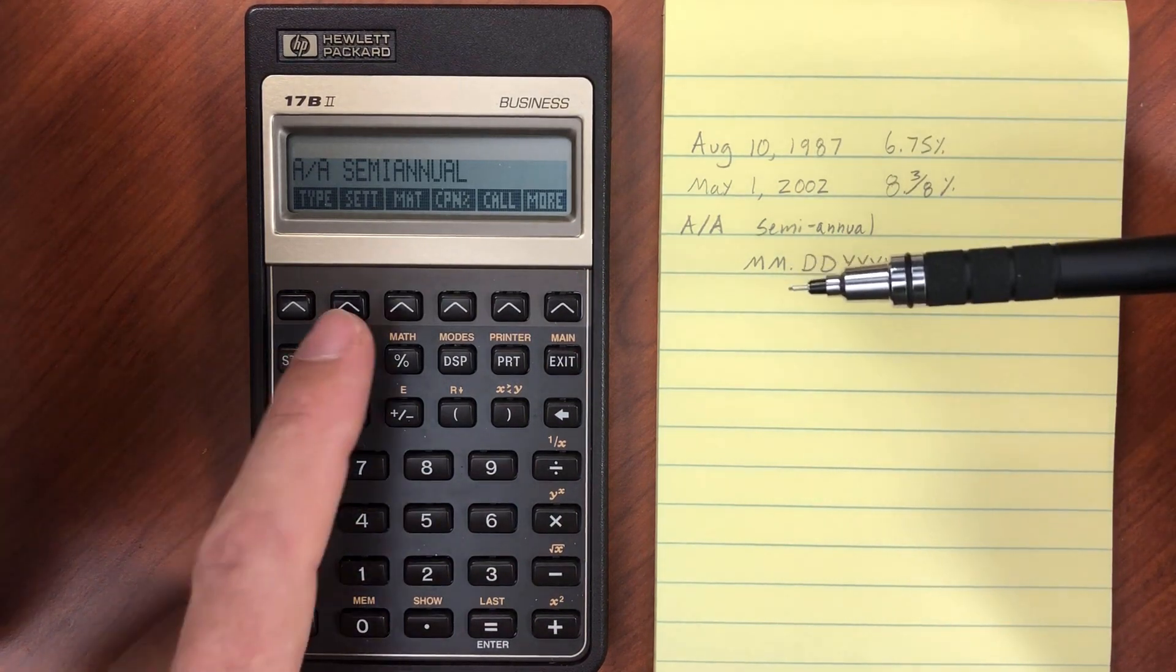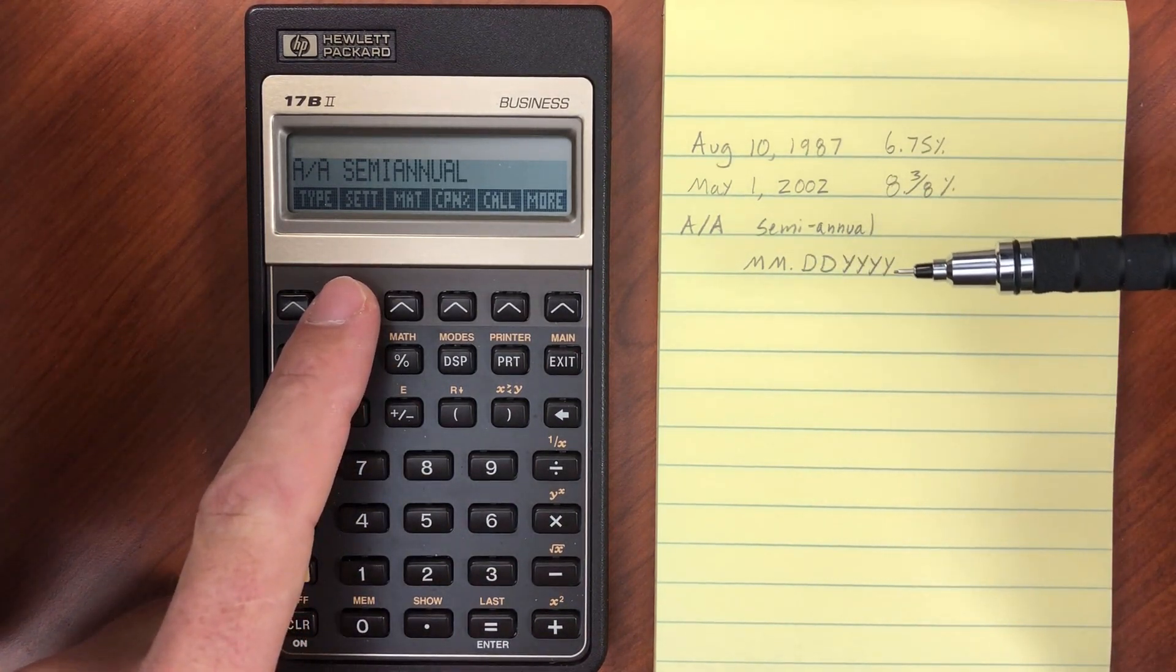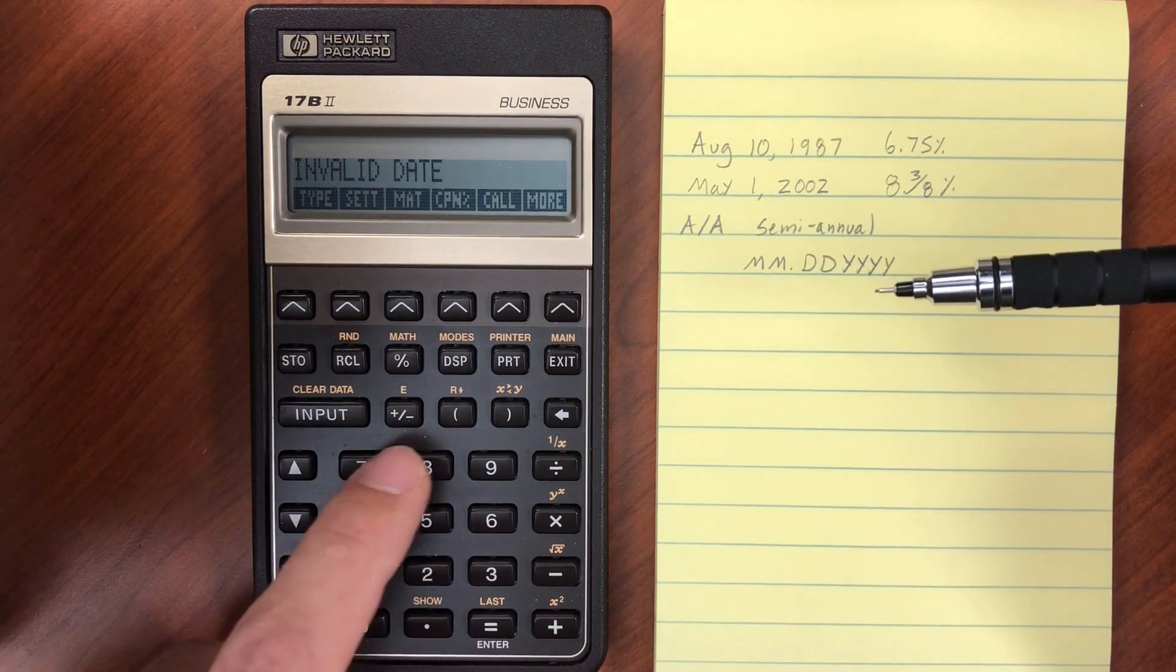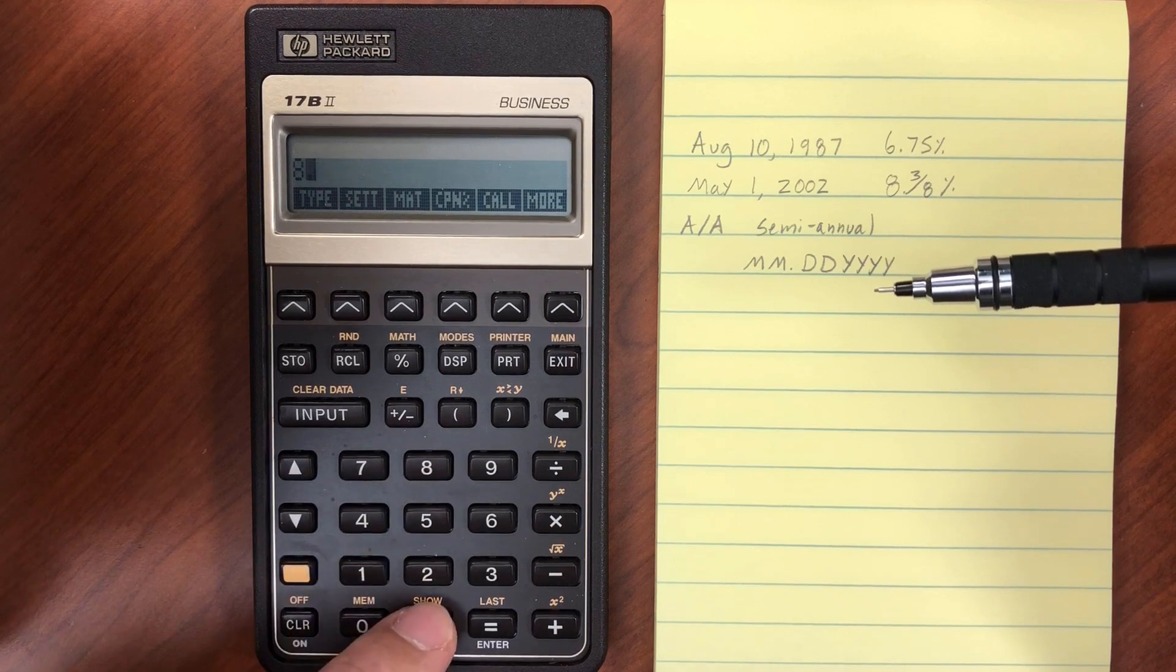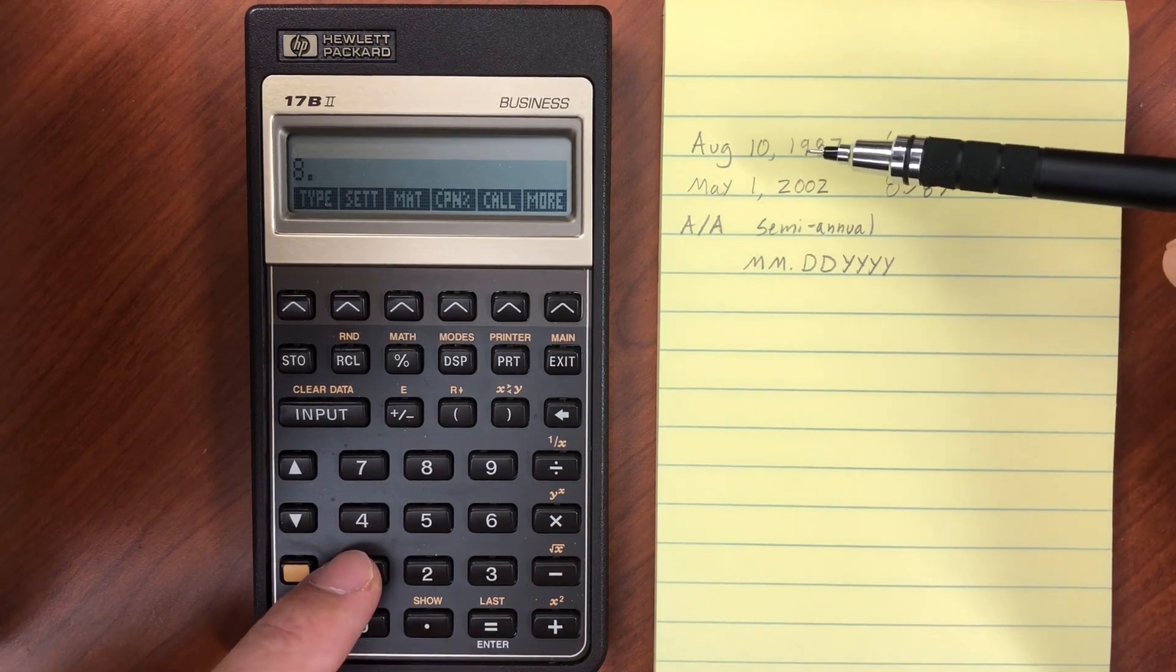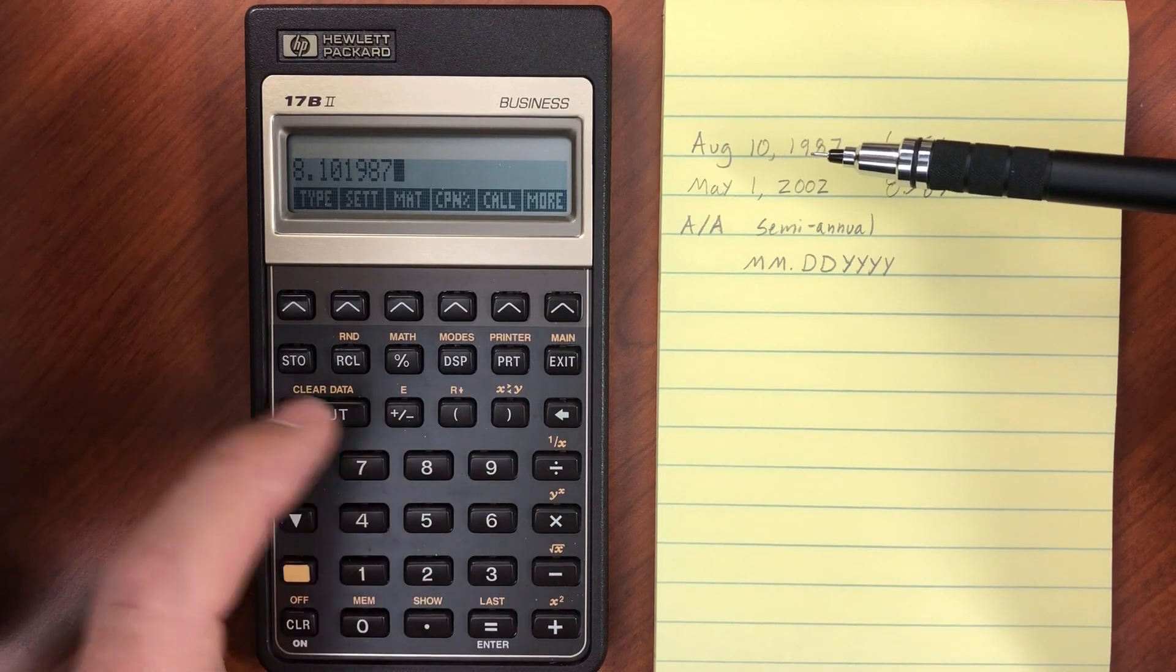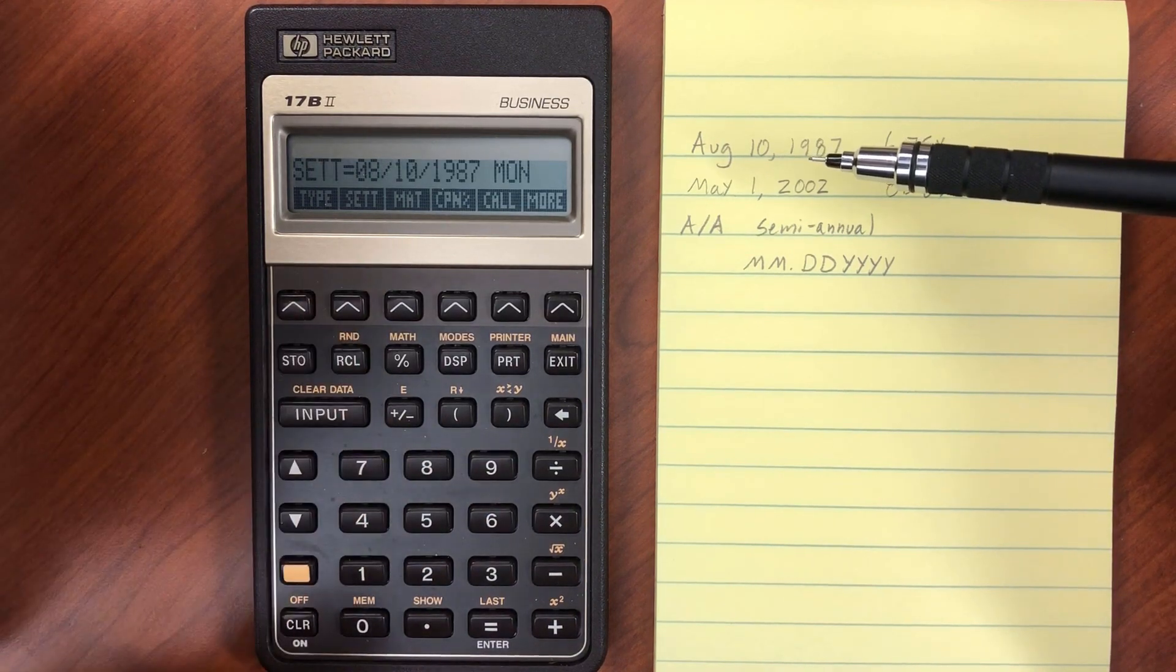The settlement date is when we're going to purchase this. Let's enter 8 point, that's August 10th, 1987. Go ahead and enter that as our settlement date.